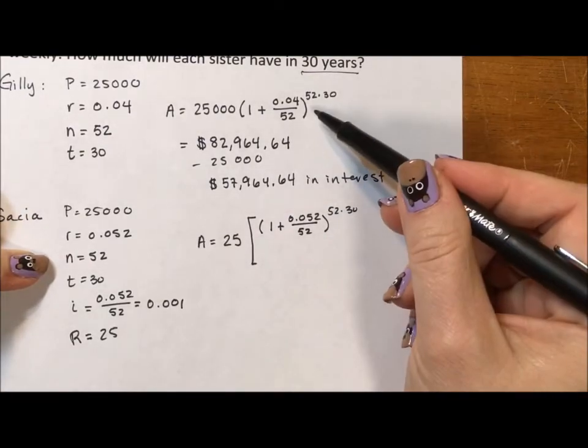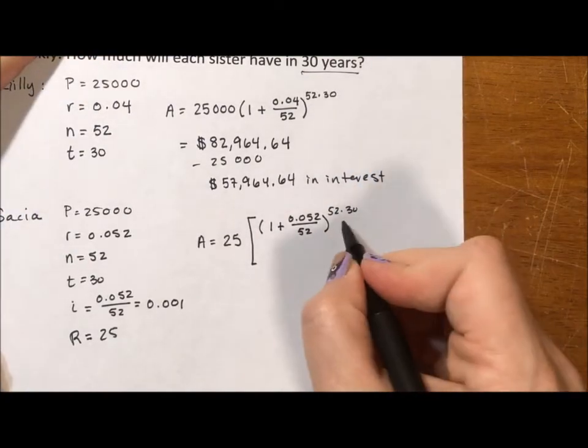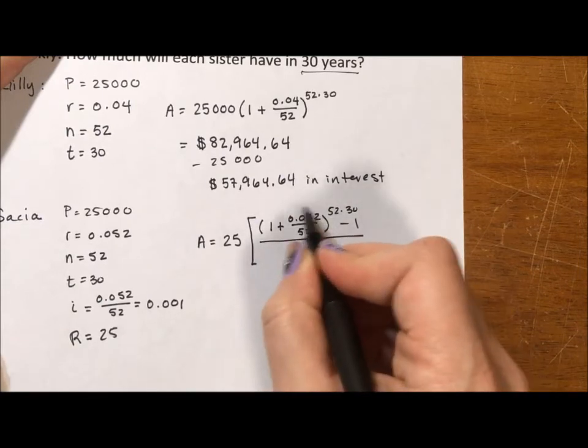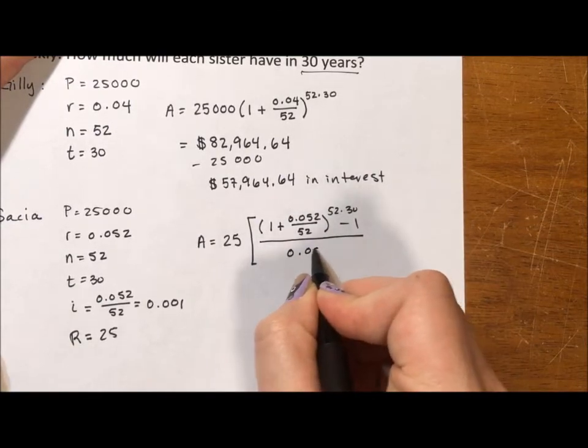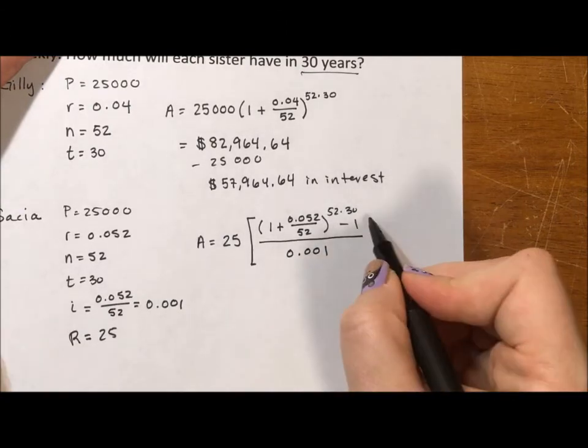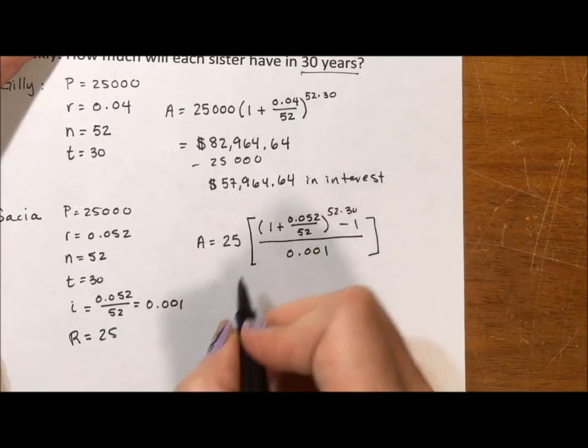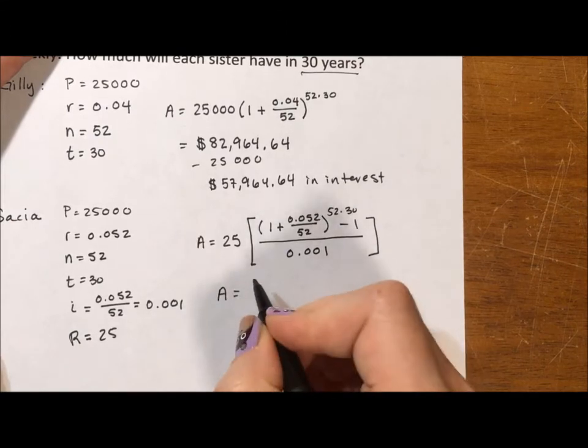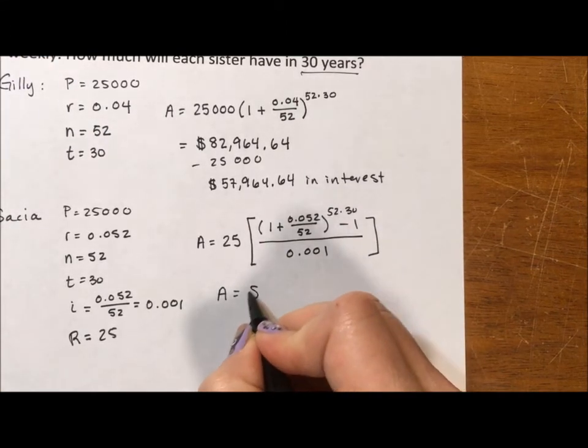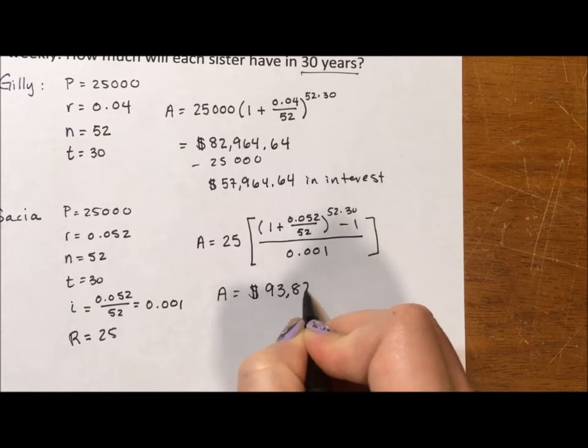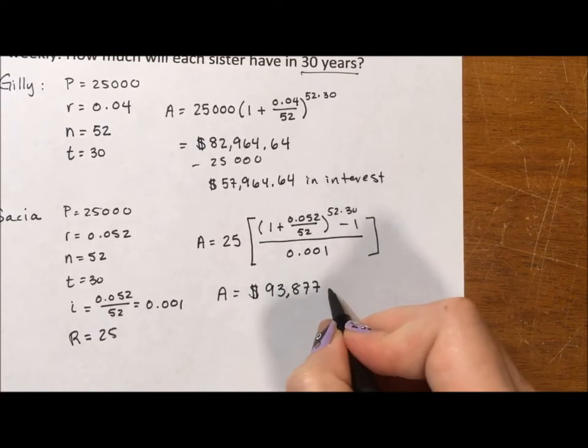This looks a lot like what we did with Gilly, but then we need to subtract 1 and divide by this interest again. In this case, I'm just going to write the 0.001. I could have written the fraction again. If we multiply this out, we find out that at the end of 30 years, Saisha has $93,877.83.